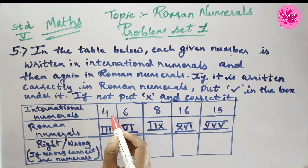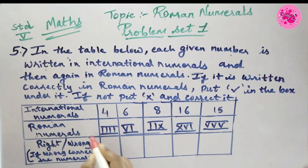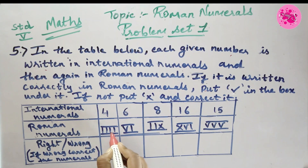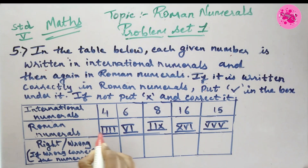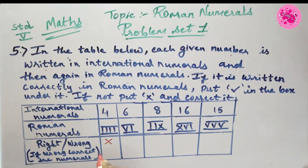Number 1: International numeral 4, and IIII is given. But we never write 4 like this in Roman numerals, so it is wrong. Instead, we write it as IV (I and V).